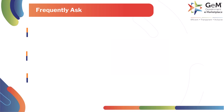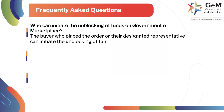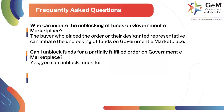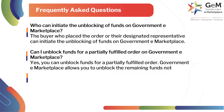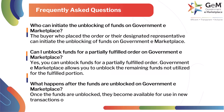Frequently asked questions: Who can initiate the unblocking of funds on Government eMarketplace? The buyer who placed the order or their designated representative can initiate the unblocking. Can I unblock funds for a partially fulfilled order? Yes, Government eMarketplace allows you to unblock the remaining funds not utilized for the fulfilled portion. What happens after the funds are unblocked? Once unblocked, they become available for use in new transactions or can be credited back to your account, depending on the specific circumstances.